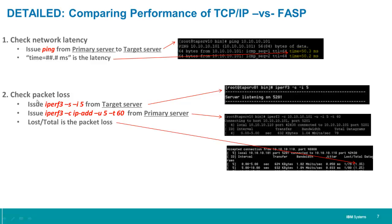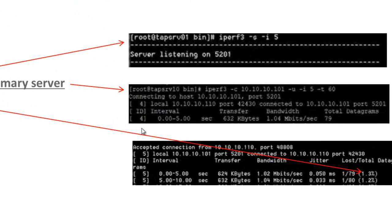To measure packet loss, on the target server set up a listening port by issuing iperf3 -s -i5. Then on the primary server, issue iperf3 -c [target IP] -u -i5 -t60. That will connect to the target server and you'll see statistics appear. What we're interested in is the lost/total ratio — in this case we ended up with 1.3% packet loss, which is even higher than the 0.5% minimum threshold.